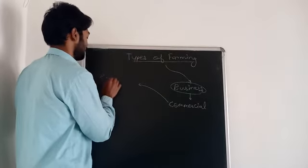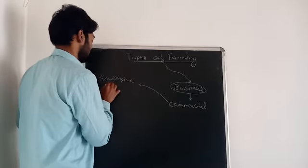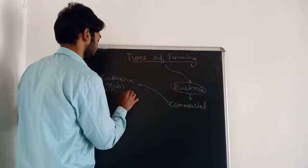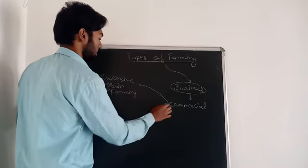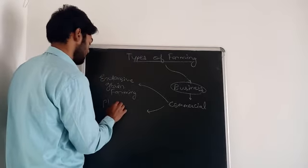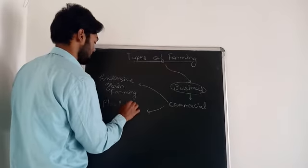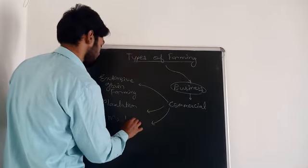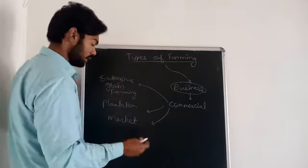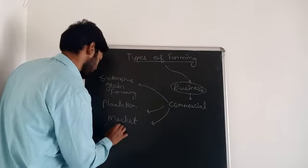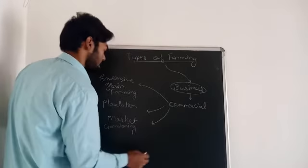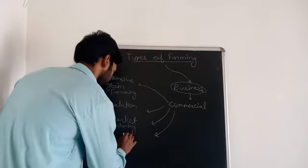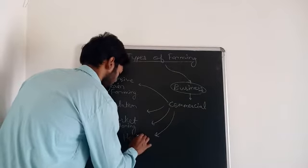The types of commercial farming are: first, extensive grain farming; second, plantation farming; third, market gardening; and fourth, horticulture and floriculture.